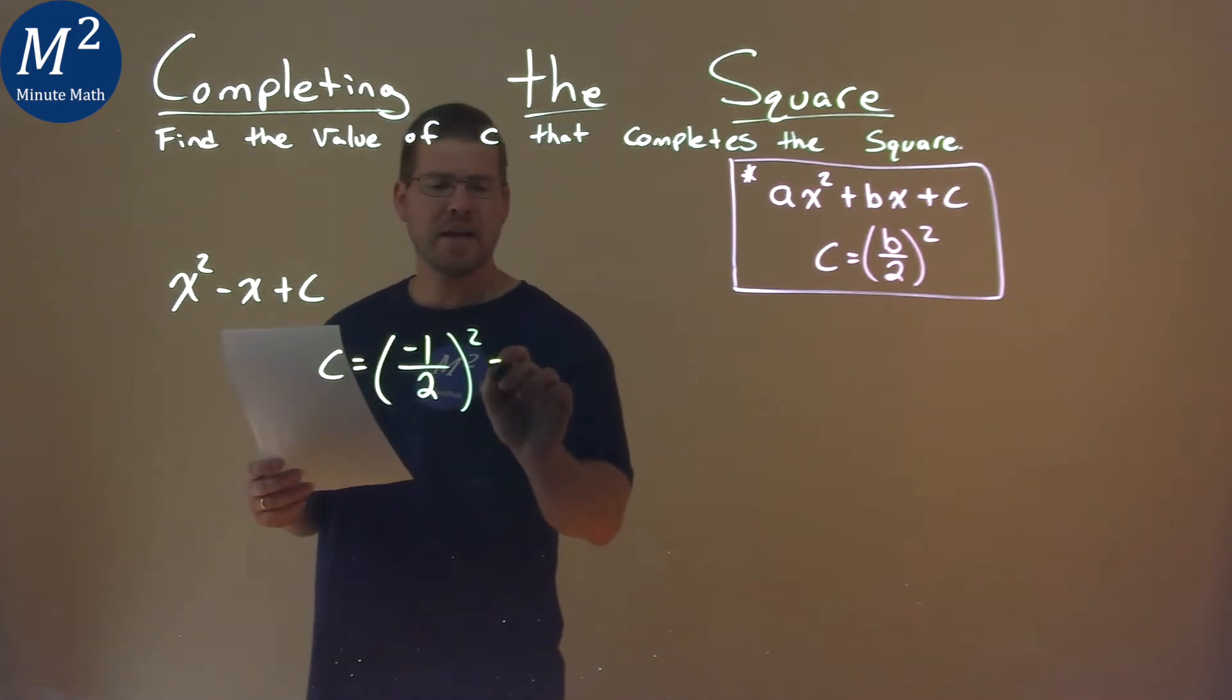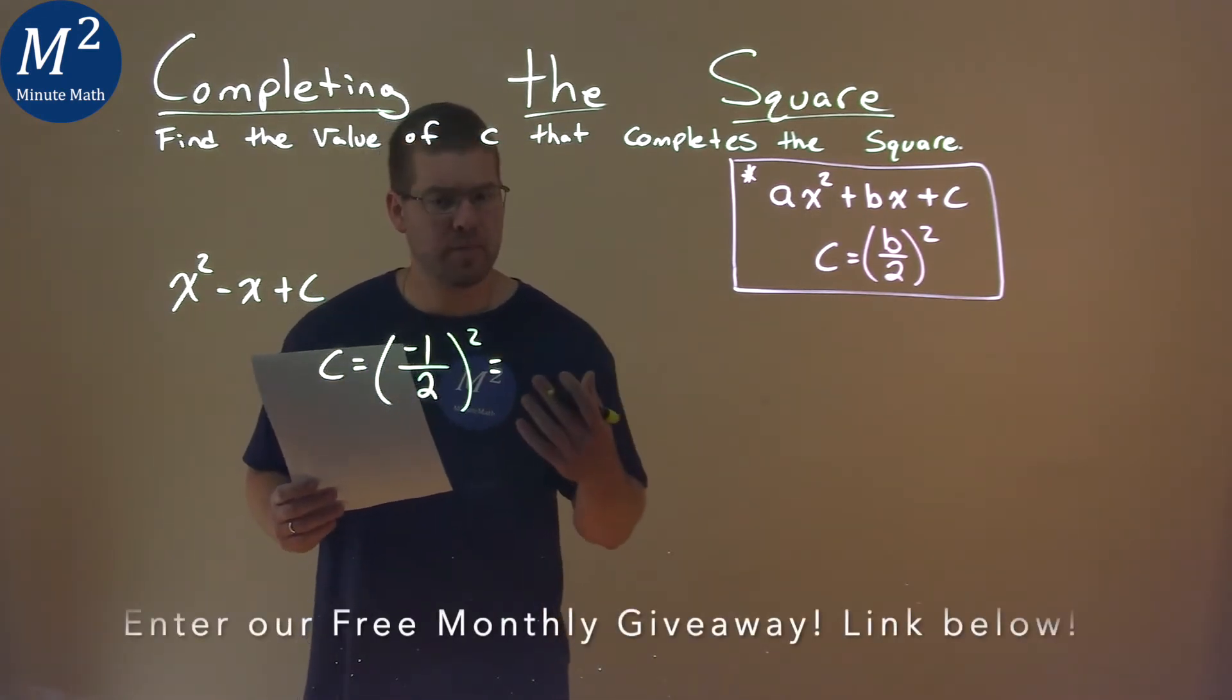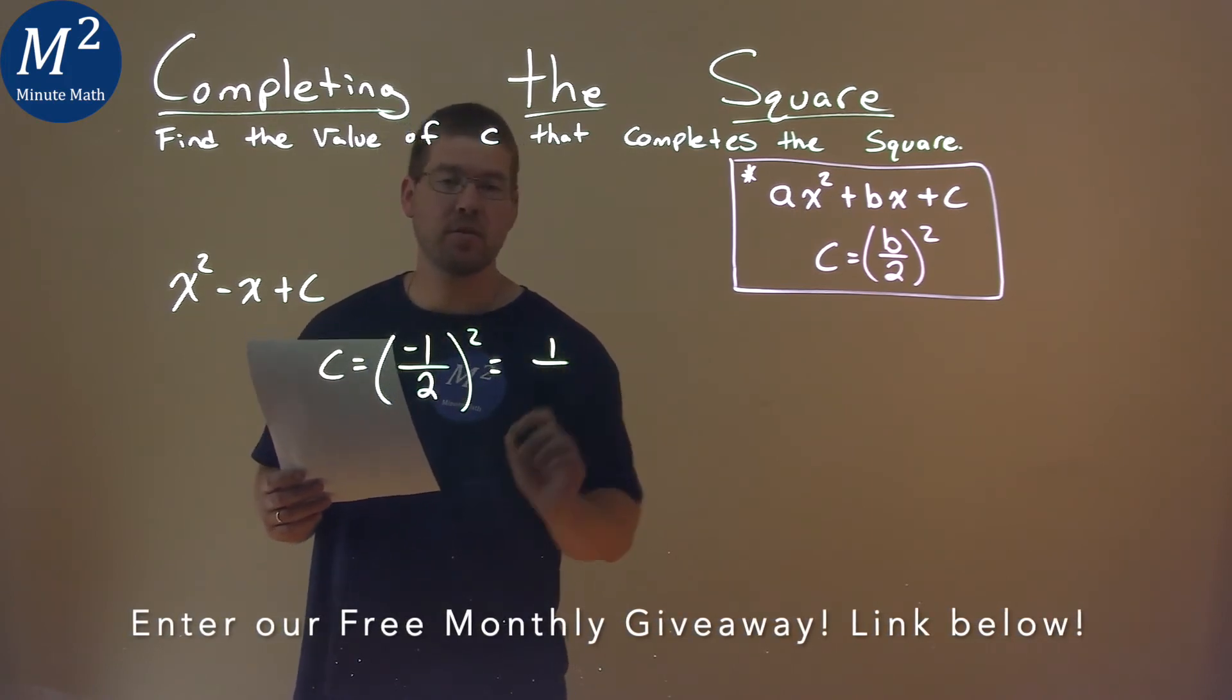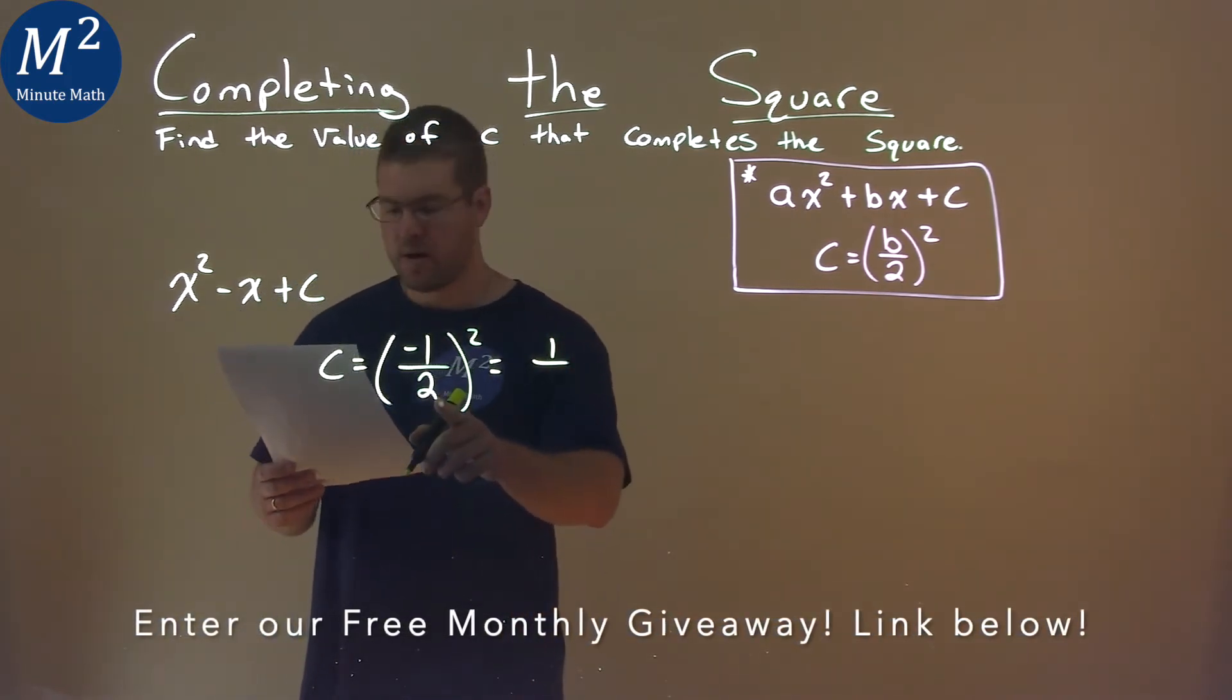Well, what is negative 1 half squared? We square the numerator and square the denominator. Negative 1 squared is a positive 1, while 2 squared is a 4.